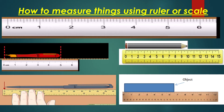Now we are going to learn how to measure things using a ruler or scale. A ruler is a tool used to measure length. The long marks under which numbers are written on the ruler denote centimeters: 0, 1, 2, 3, 4, 5, 6. The smaller marks between each centimeter represent millimeters. There are 10 small lines between each centimeter, so 10 millimeters make 1 centimeter.